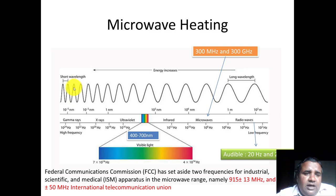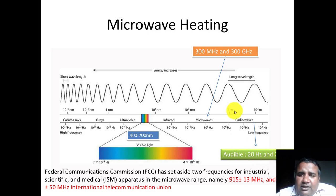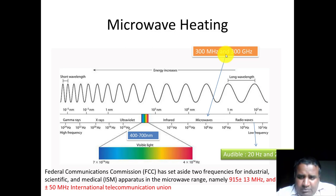As wavelength decreases, frequency increases, and the energy of the wave also increases — higher the frequency, higher will be the energy. In this diagram, the first portion indicates radio waves, and the audible range for us is between 20 Hz to 20 kHz. Moving further to around 10 to the power 8 Hz, this is the region to which microwaves belong. Microwaves lie in the region of 300 MHz to 300 GHz. Microwaves and radio waves are also used in communications, but some scientists found their application in food heating.